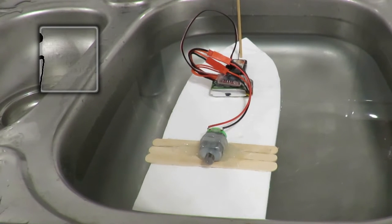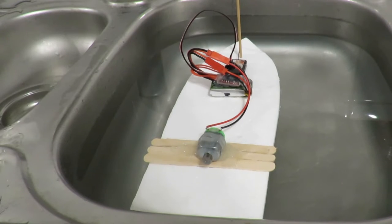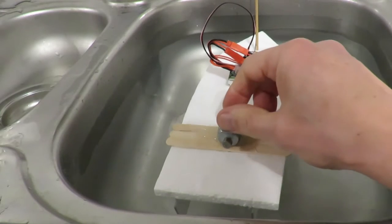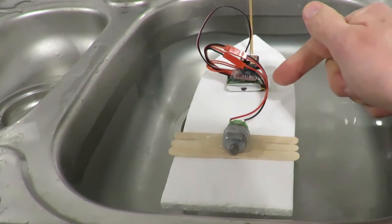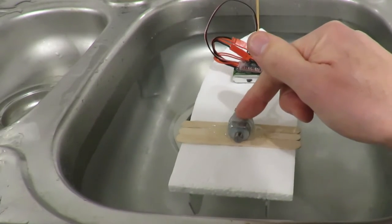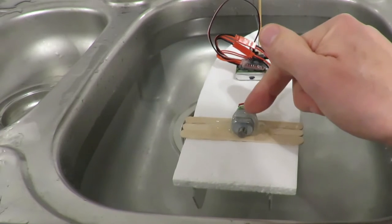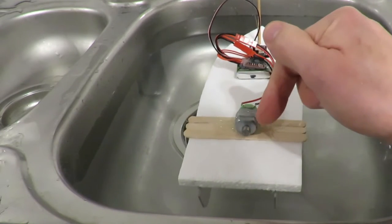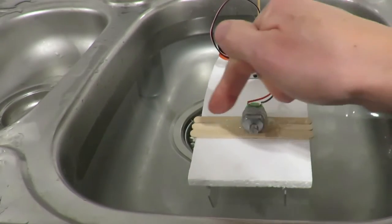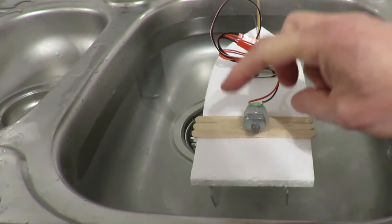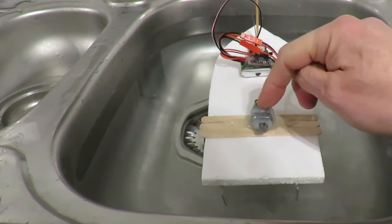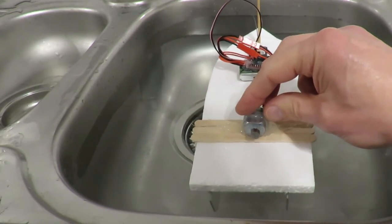Hi guys. Third attempt at this vibration propulsion system. So we've got the same motor but now we're on a foam hull or boat. Had a couple of problems already. I just hot glued the motor straight to the foam and in the first attempt it just vibrated itself loose straight away. So I've got popsicle sticks across there to spread the load and then lots of hot glue over the top of it to spread the load again and hold it in place.